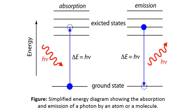The light absorbed by a sample when irradiated is absorbed through electronic transitions. When light is focused on matter, the electrons present in the lower or ground states absorb that light and jump into higher energy states, which is a characteristic unique to every substance.